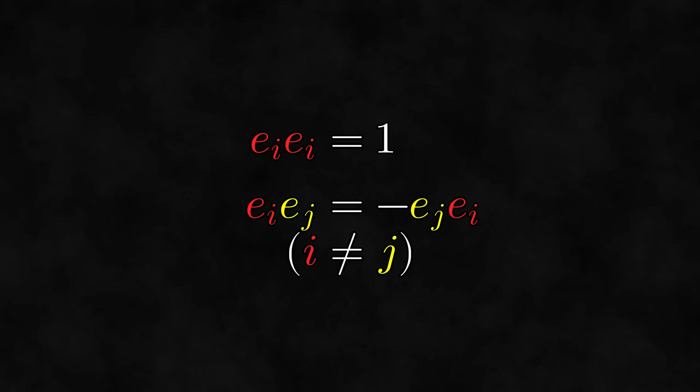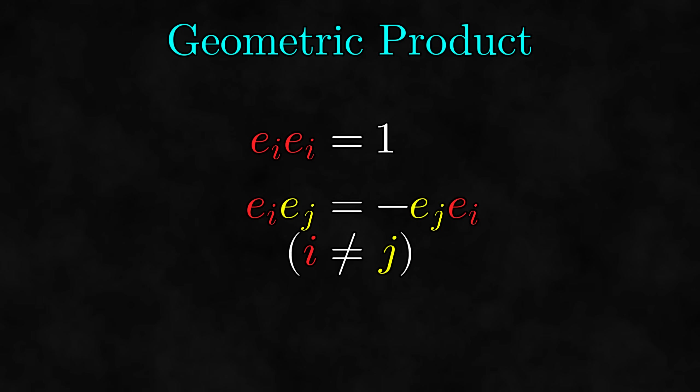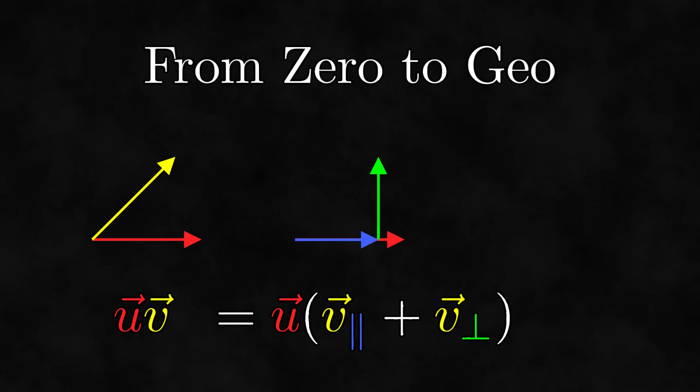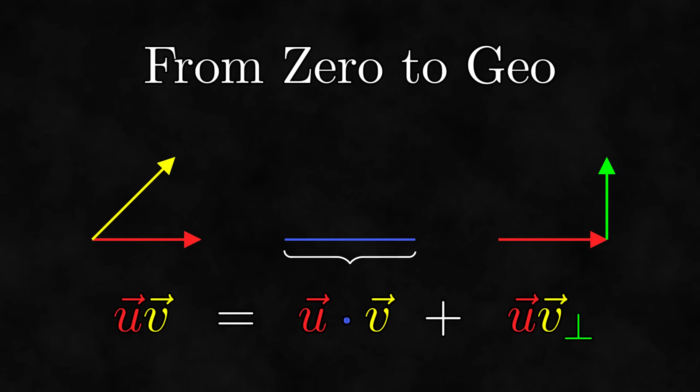In the last video, we looked at the geometric product of multivectors. However, we only looked at it algebraically. Since it's called the geometric product, what does this product actually look like geometrically? That is what we will answer in this video. This video is a part of From Zero to Geo, a series where we formulate geometric algebra, an incredibly powerful branch of mathematics, from the ground up.